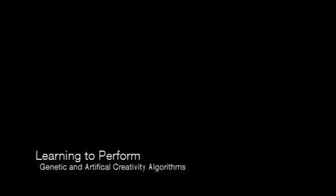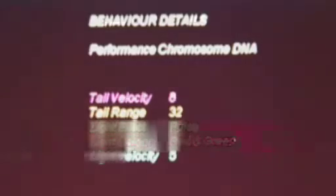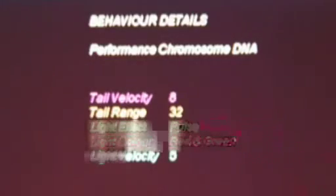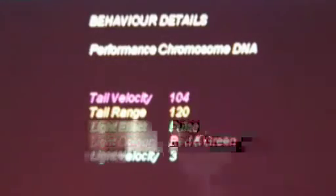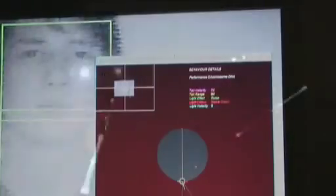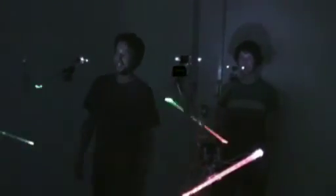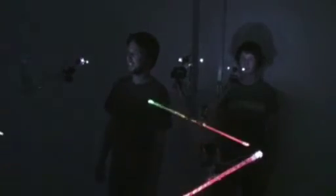A gene pool of performative DNA is randomly generated for each of the dancers when they enter the ecology. Each dancer evaluates the success or fitness of its performances based on the attention levels of its inhabitants. As they learn, they simultaneously observe each other and assess which of the other dancers are most popular with the audience.